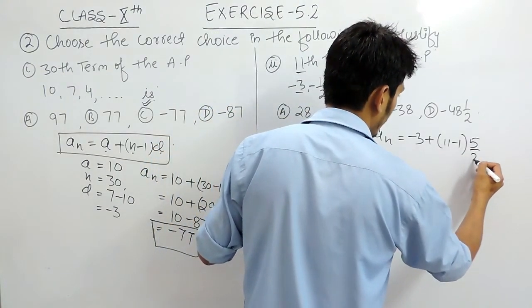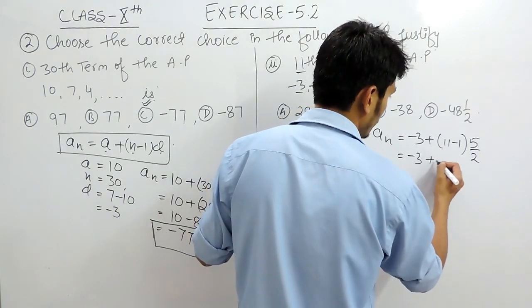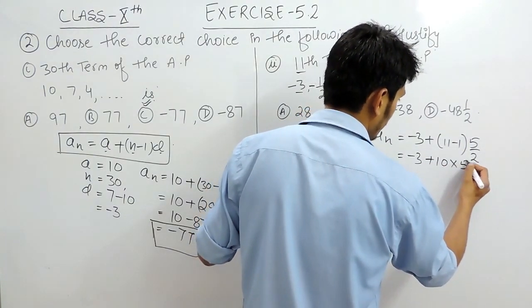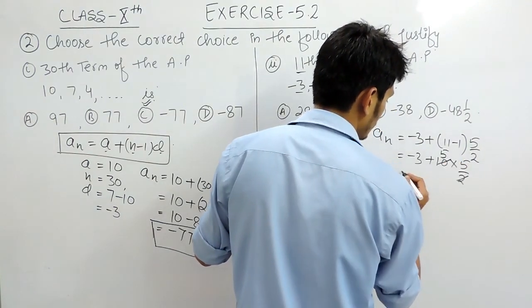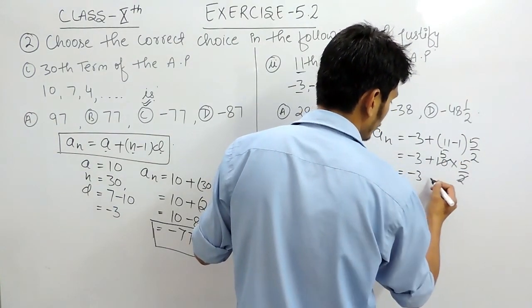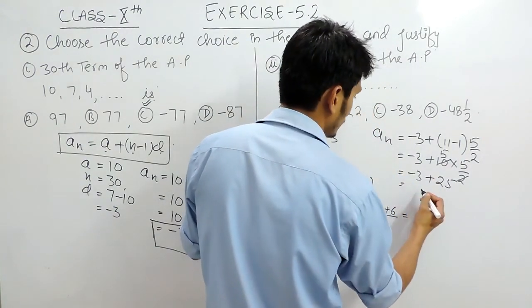And the common difference is 5 by 2. So this will be -3, and this is plus 10 multiplied by 5 by 2. And this is 5 times 5—5 into 5 is 25.